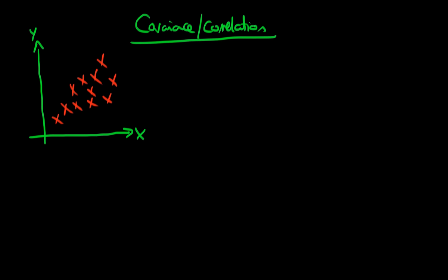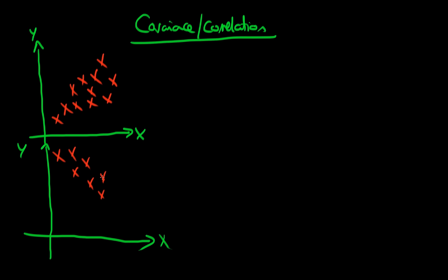Let's also think about the case whereby we have a negative relationship between X and Y. So if I was to plot a few points, it would look something like this. As X increases, Y tends to decrease. We'd like a way mathematically of showing this particular relationship.